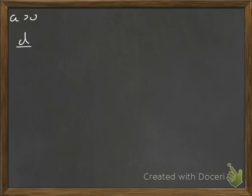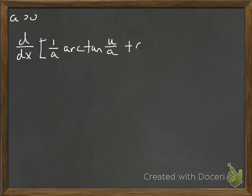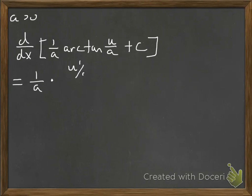Let's take a look at another one. Again, we're going to have the constant A be greater than zero. This time we're going to take the derivative of 1 over A times arc tan of U over A plus some constant of integration. The 1 over A is just hanging out. The derivative of arc tan of U over A is U prime over A, divided by 1 plus (U over A) quantity squared in the denominator.